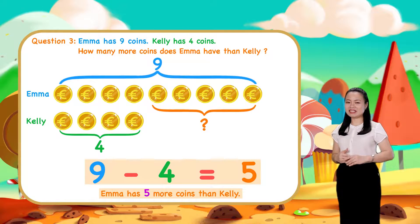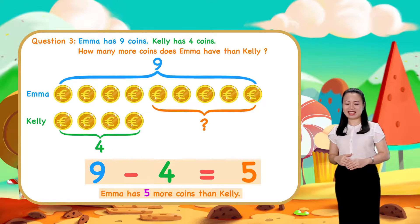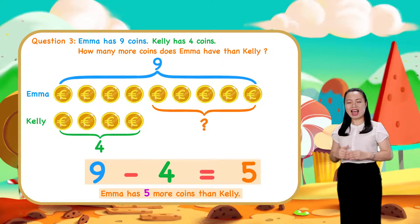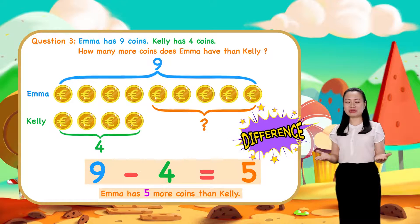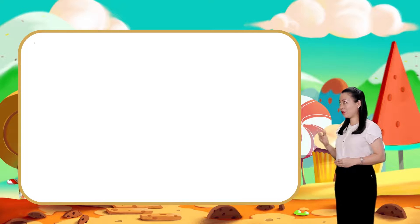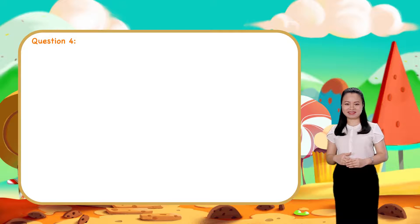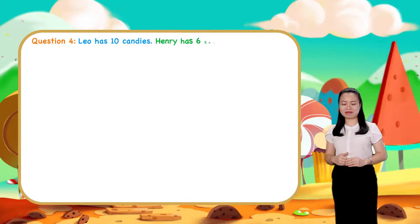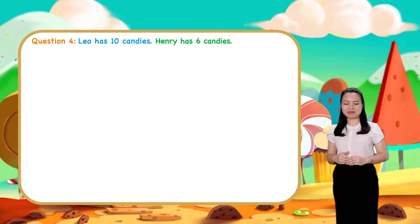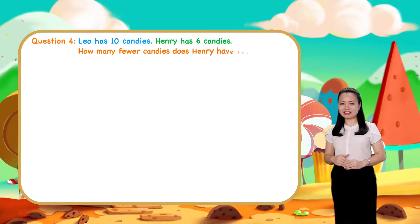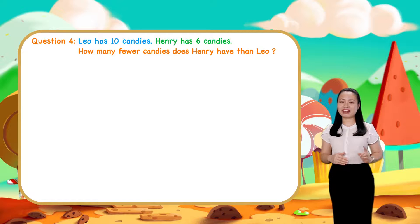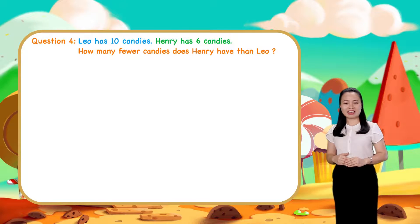As you can see from question 3, for 'how many more' we find the difference between the two numbers. Question 4. Leo has 10 candies. Henry has 6 candies. How many fewer candies does Henry have than Leo? I'll give you some time to find the answer for yourself.